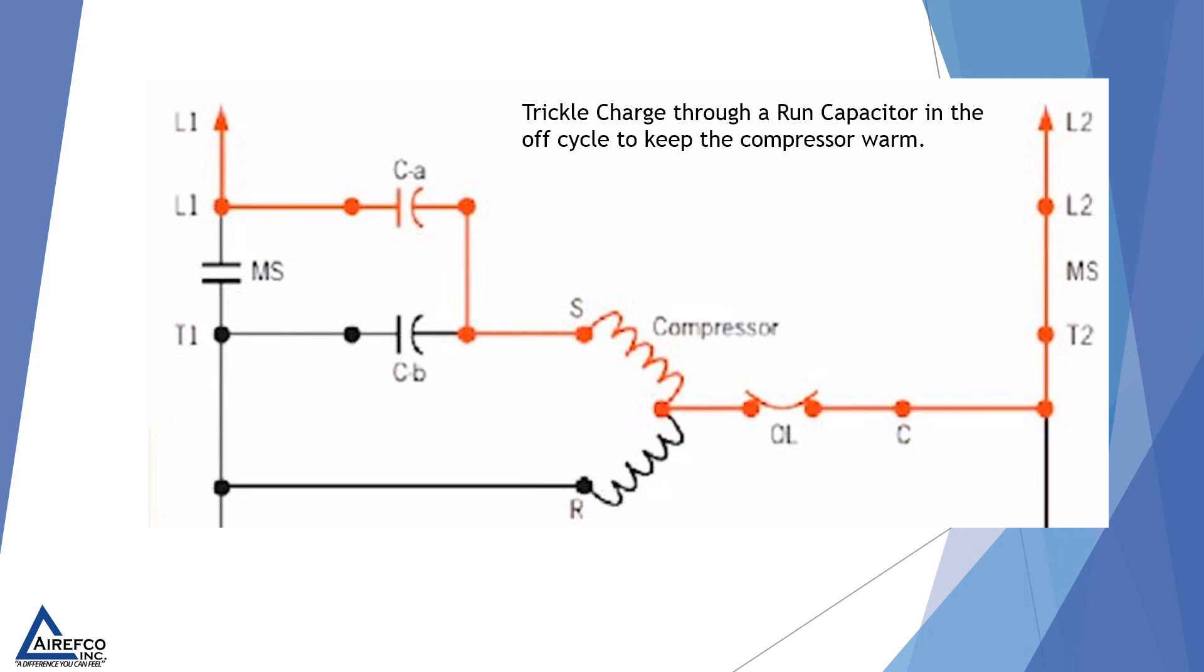One of the ways manufacturers applied crankcase heat in some older units was through a run capacitor. A trickle charge was run through a run capacitor in the off cycle to keep the compressor warm.